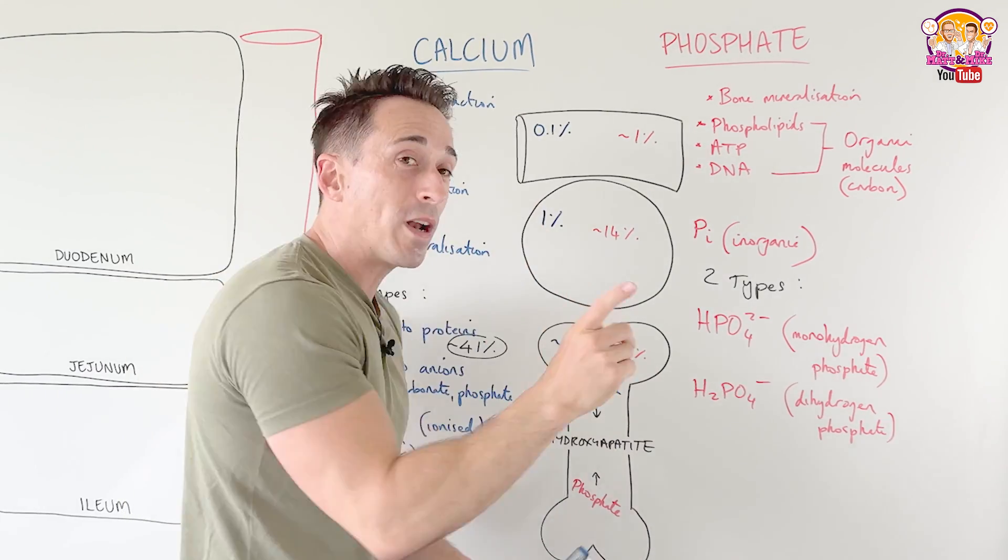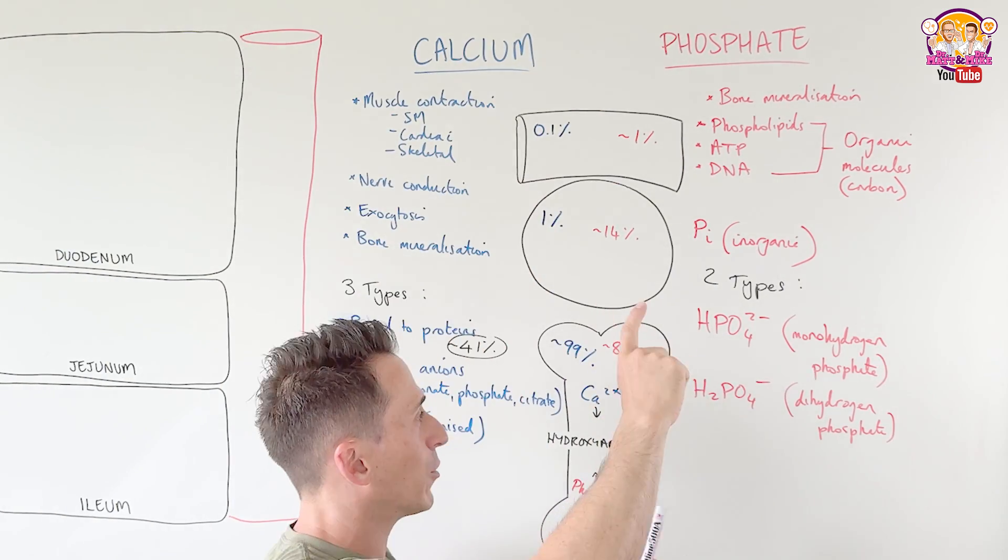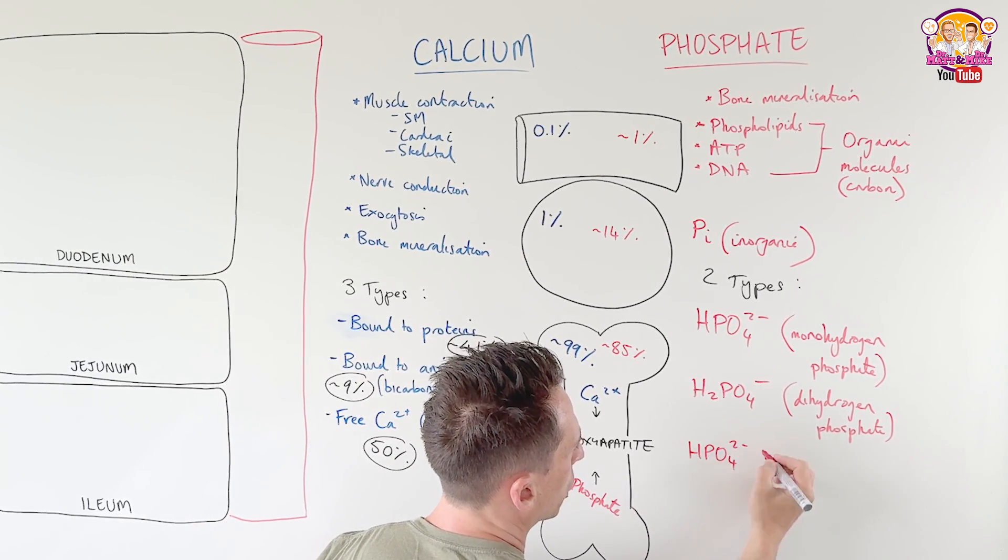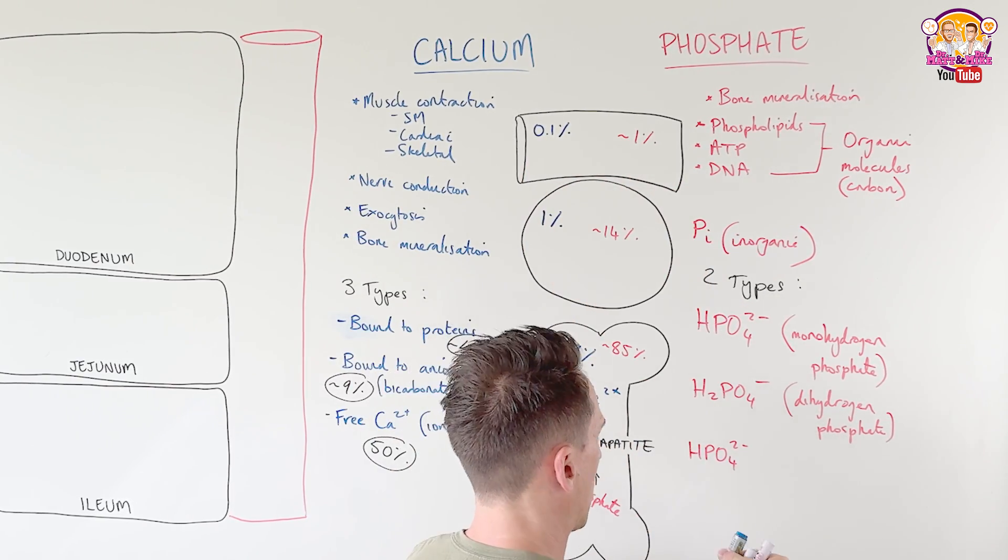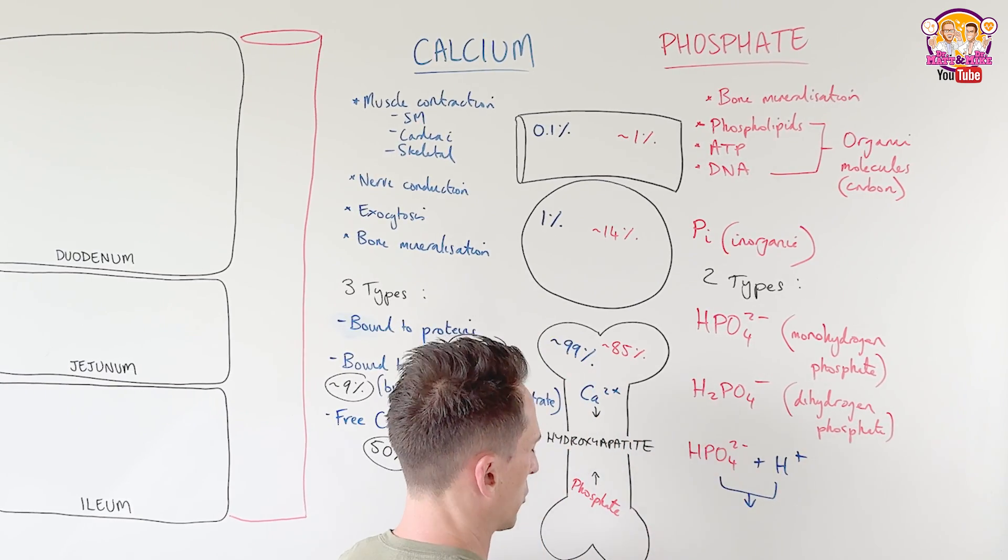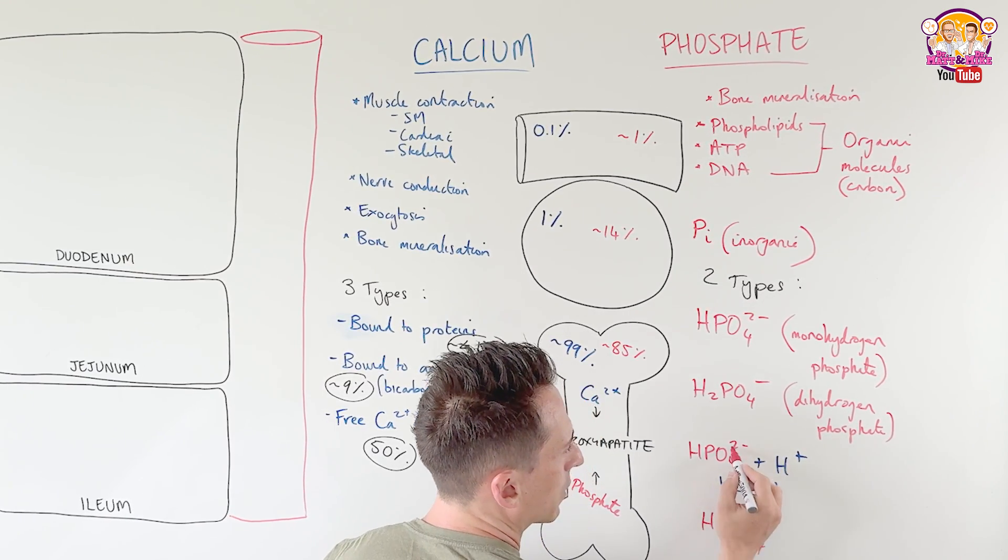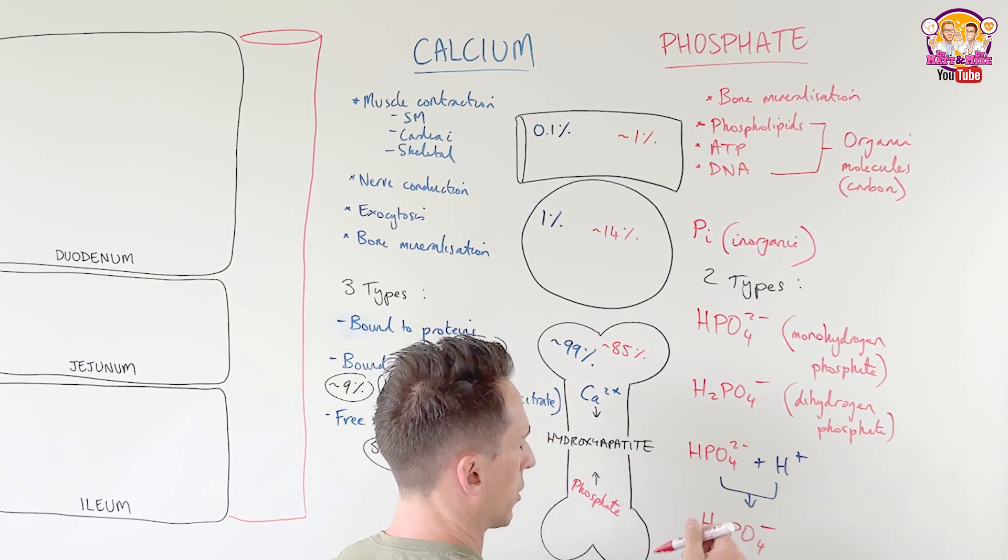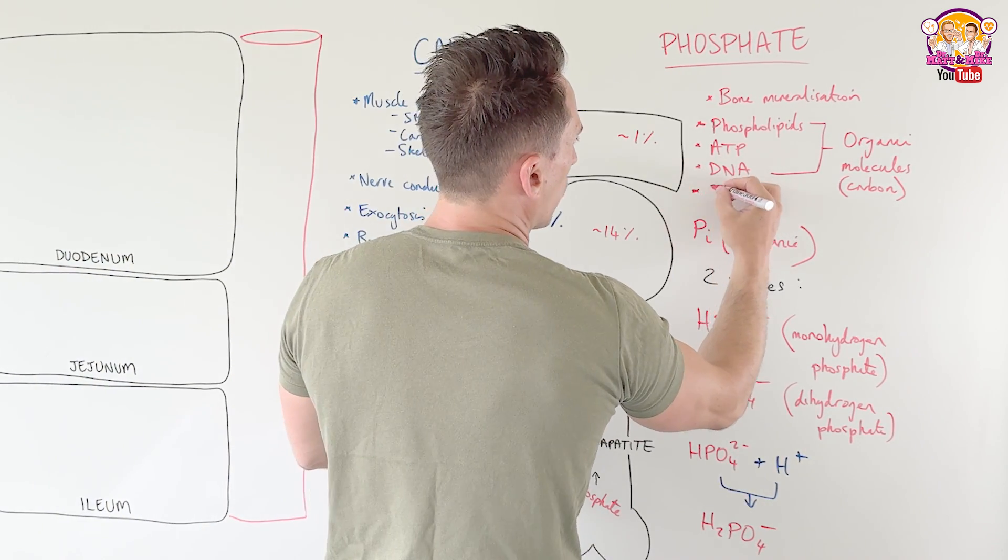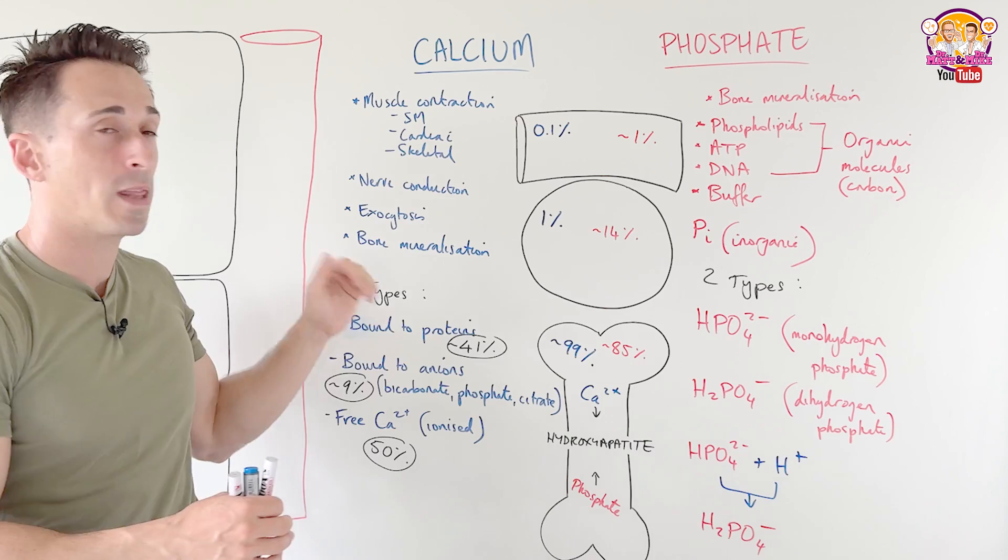Now, importantly, one of the functions of monohydrogen phosphate is to act as a buffer. So I told you some of the functions here. One function of the inorganic phosphate is to act as a buffer. So for example, if you've got hydrogen phosphate floating through the cells or tissues of your body and it comes into contact with a hydrogen ion, they can bind together to form dihydrogen phosphate. So it's dihydrogen phosphate. So that's really important. One of the roles is to work as a buffer.